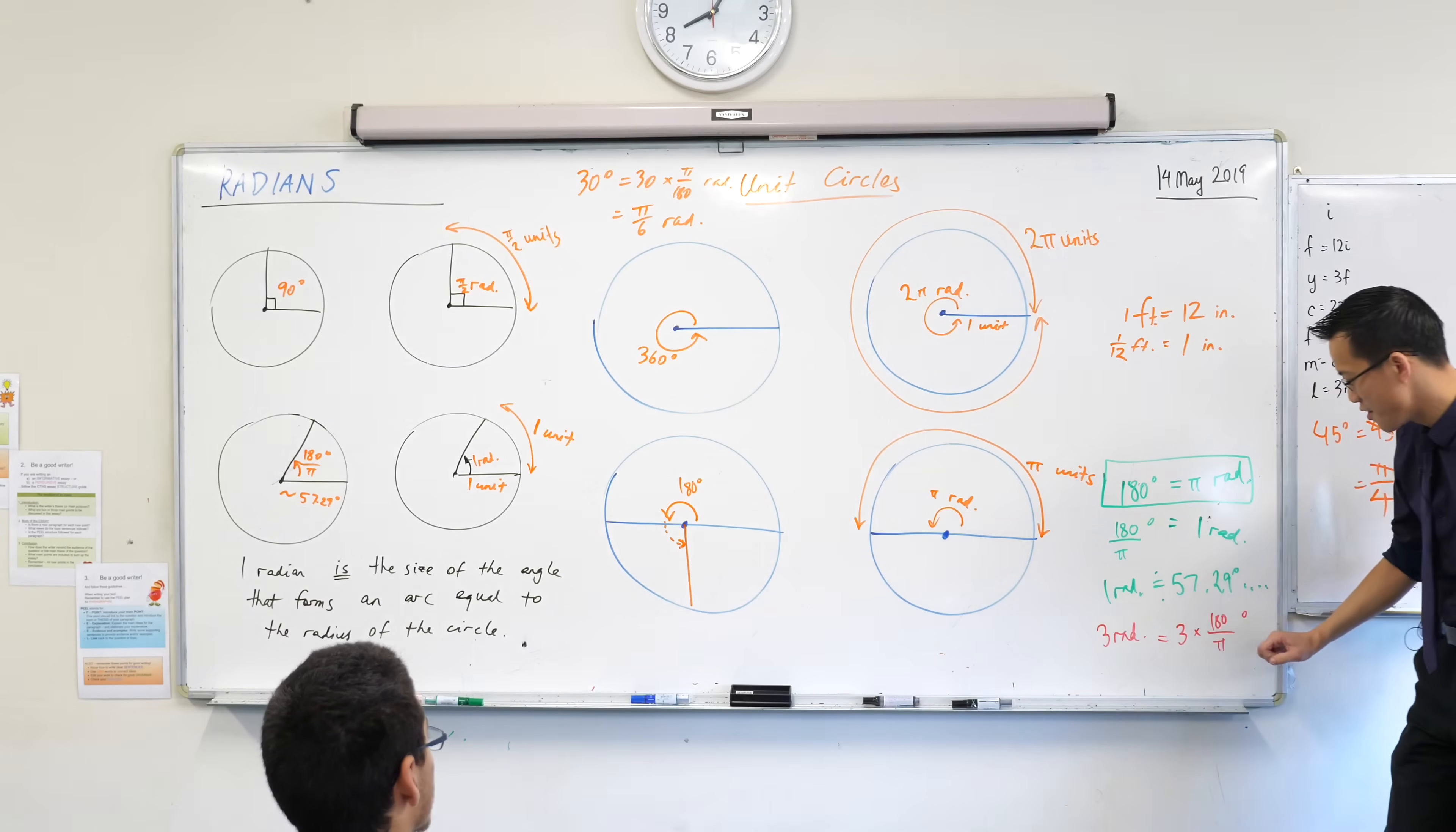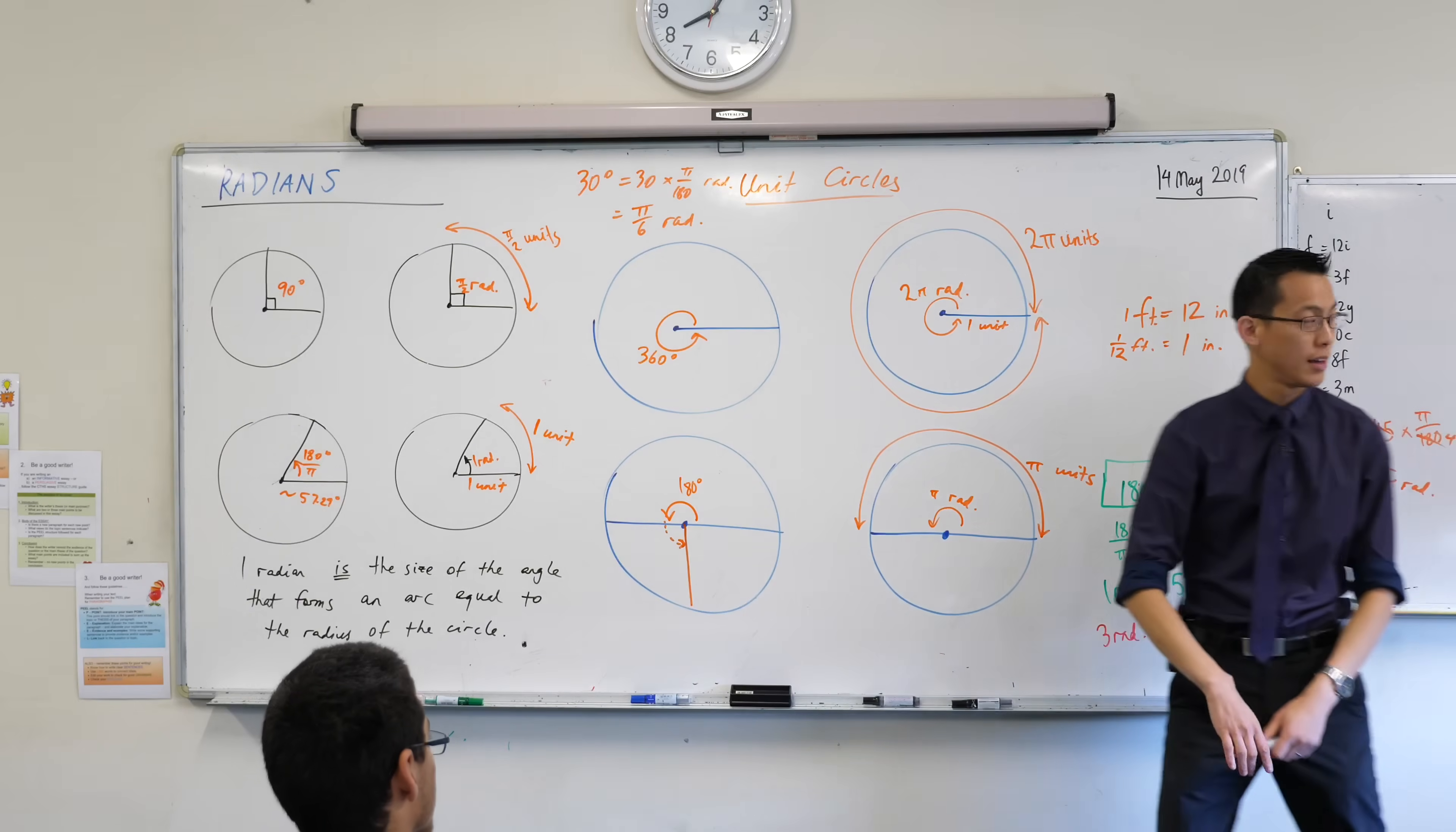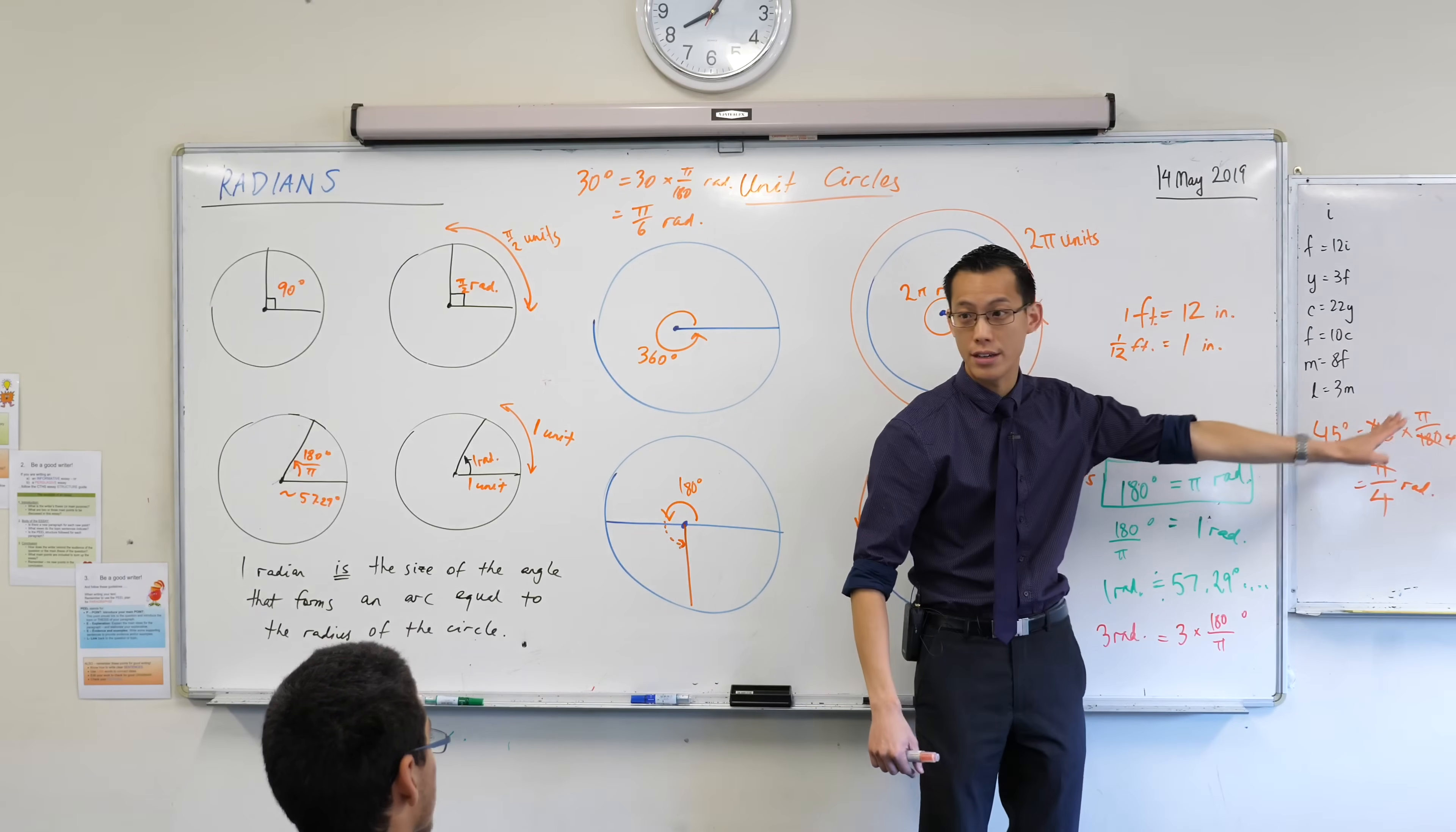So this is how you're going to convert from radians to degrees. This is how you're going to convert from degrees to radians.